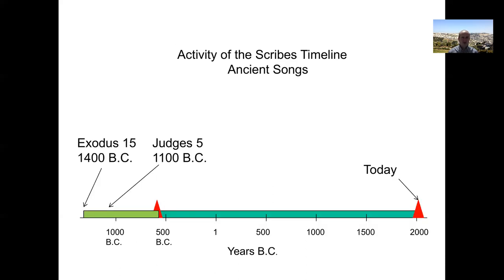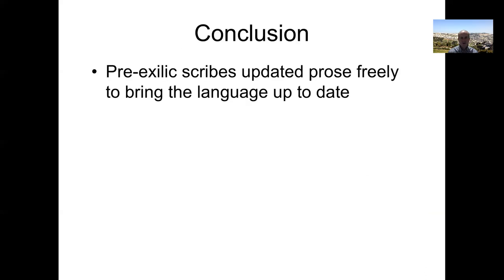So here we have a timeline for ancient songs like Exodus 15 or Judges 5, the Song of Deborah. Those are very, very old, but they may not have been updated nearly so much as the prose passages that are immediately before and after them. So when you look at the older books in the Old Testament, we have a mixed bag.